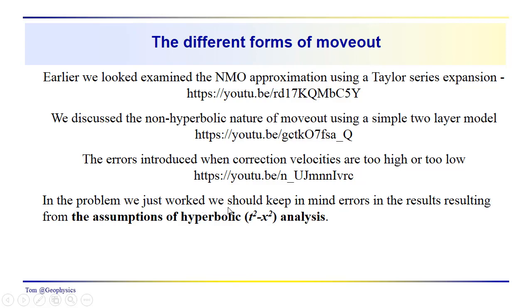And the problem we just worked, we should keep in mind the potential for error in estimating our thicknesses and the velocities. We're assuming this hyperbolic, you know, perfect hyperbola for the t squared x squared analysis, in other words perfect straight lines, which is not the case as we saw. Although the differences from linearity were very small in this particular problem, they're nonetheless something that you have to keep in mind, especially if you go to deeper and deeper intervals and your offset to depth ratio becomes much less than one.